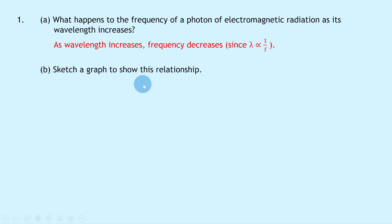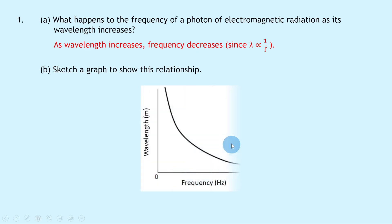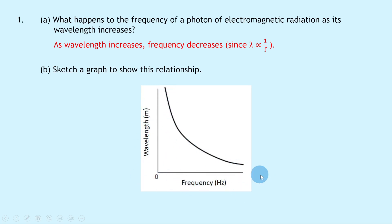Part b says to sketch a graph to show this relationship. Sketching wavelength on the y-axis and frequency on the x-axis — it doesn't really matter which way around they go — you should get an exponentially decaying curve, which shows the inverse relationship. This shows that as frequency increases, wavelength decreases.